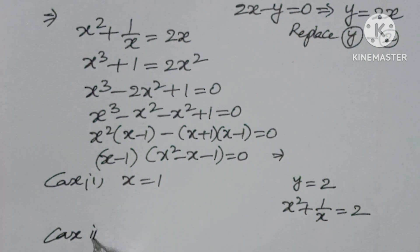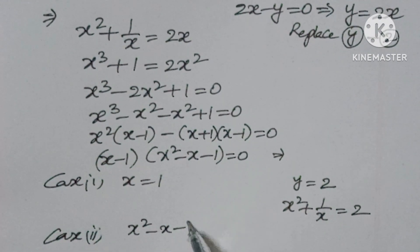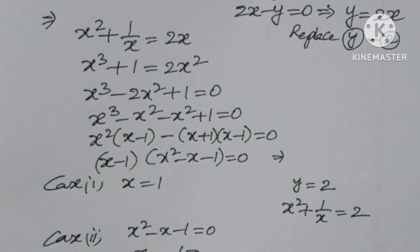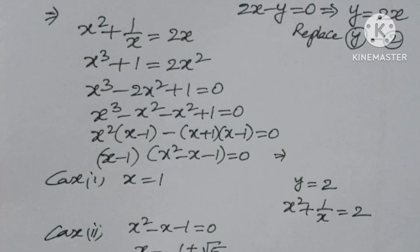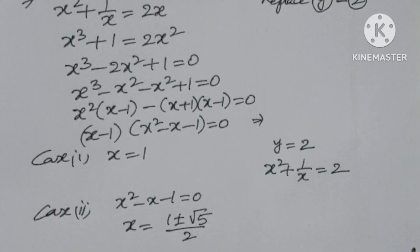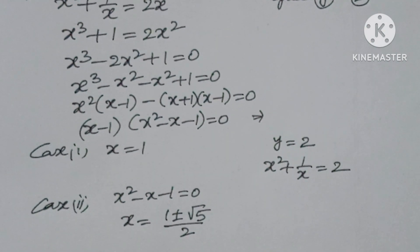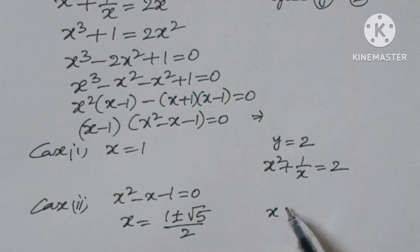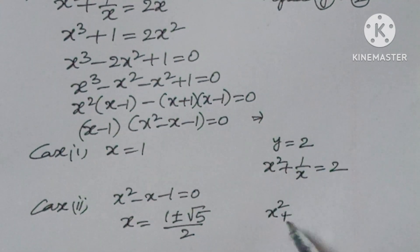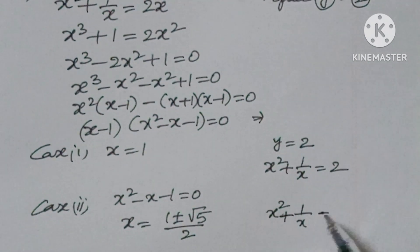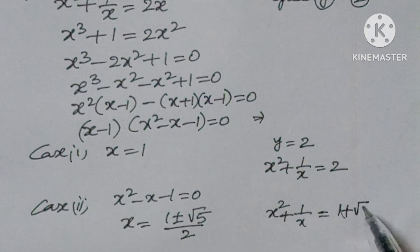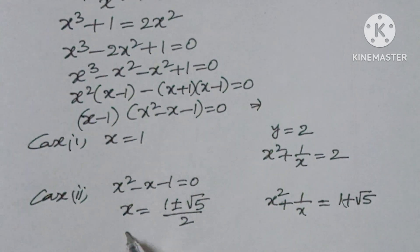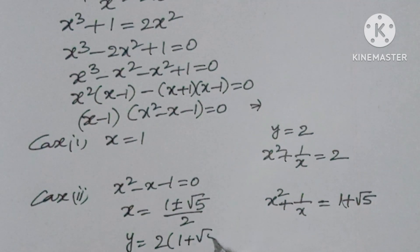Case 2: from x squared minus x minus 1 equals 0, using the quadratic formula, x equals (1 plus or minus root 5) by 2. Taking the positive value x equals (1 plus root 5) by 2, then y equals 2x equals 2 times (1 plus root 5) by 2, so the 2 cancels and x squared plus 1 by x equals 1 plus root 5.